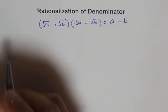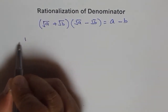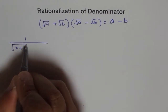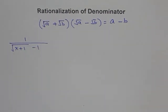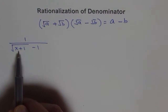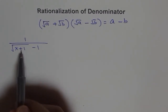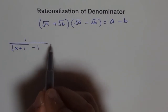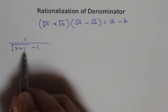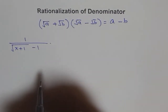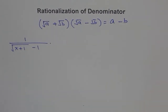Let's say we have the problem: 1 over square root of x plus 1, minus 1. We can see there is a radical in the denominator. To get rid of it, we multiply and divide by its conjugate. So we are rationalizing the denominator by multiplying and dividing by the conjugate.